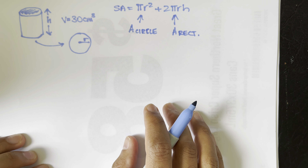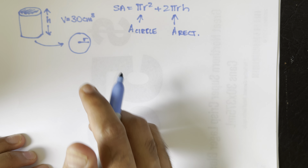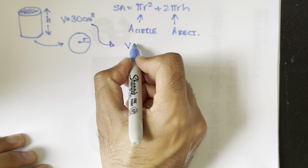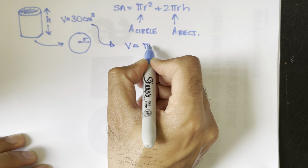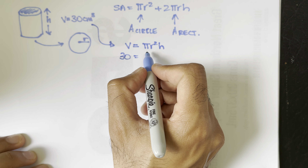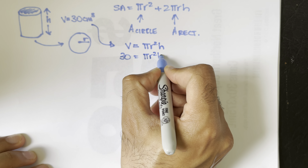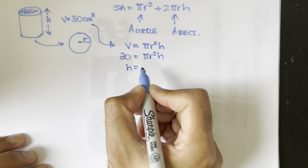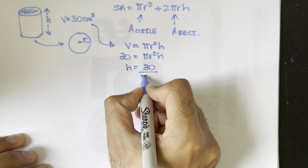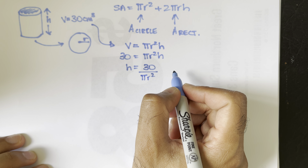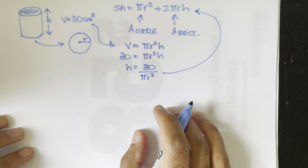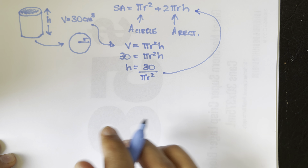We have two variables in one equation, so we'll use the volume constraint. The volume of the can is πr²h and we know the volume to be 30. We solve for h, giving us h = 30 / (πr²).